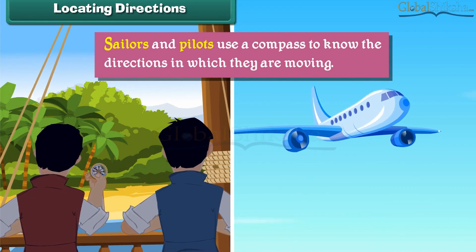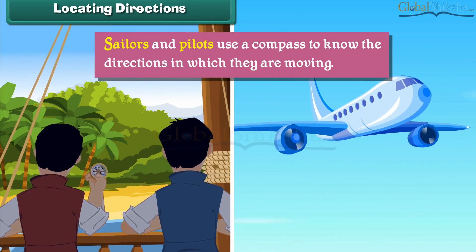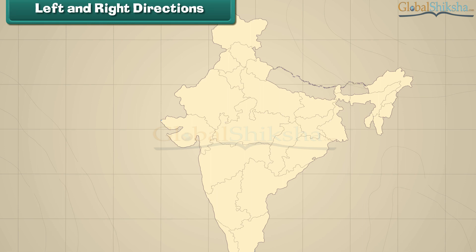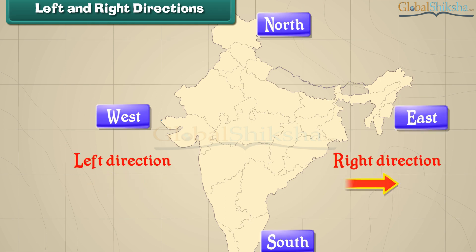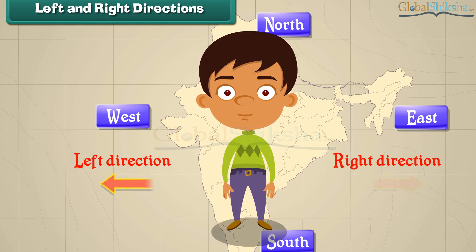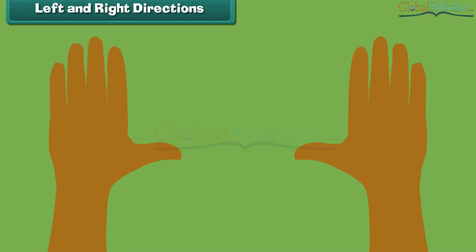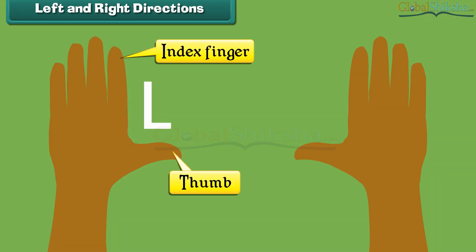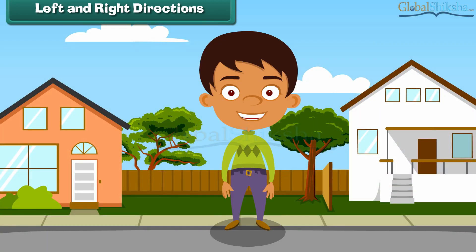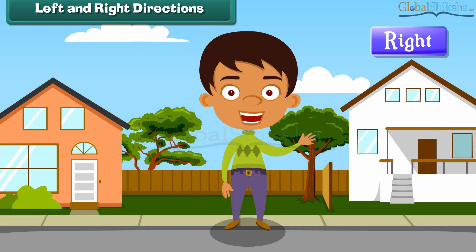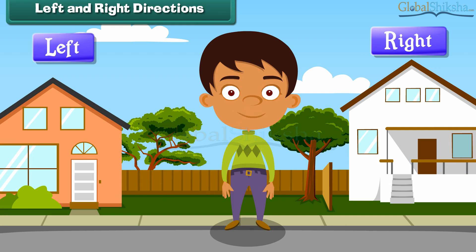Sailors and pilots use a compass to know the directions in which they are moving. In addition to north, south, west and east, we also use left and right directions to locate a place. We use our hands to indicate the left and right directions. The hand that makes the letter L when the index finger and thumb are stretched out is our left hand, and the other one is our right hand. The places towards our right hand are said to be on the right and those towards our left hand are said to be on the left.